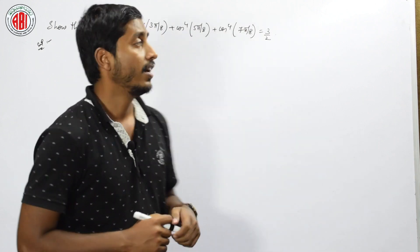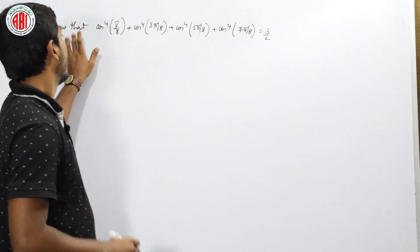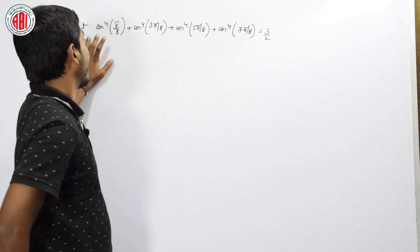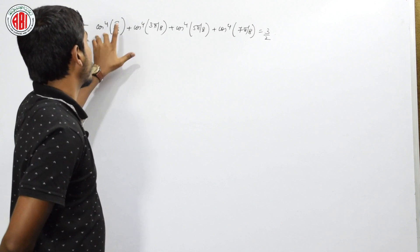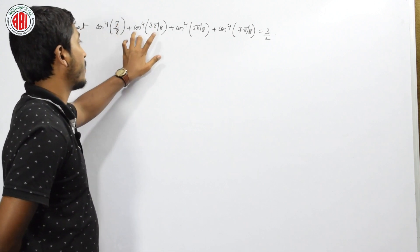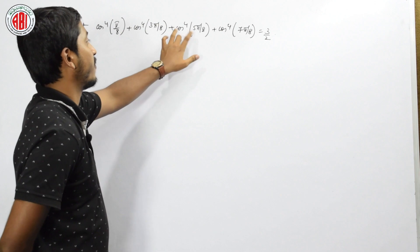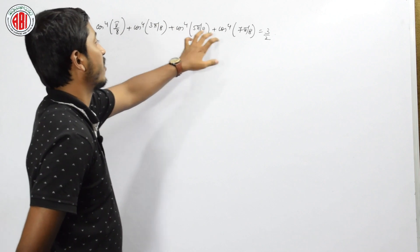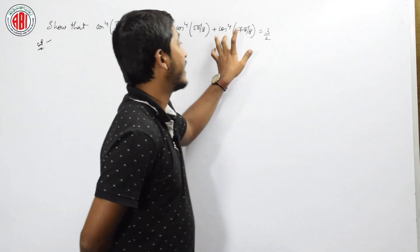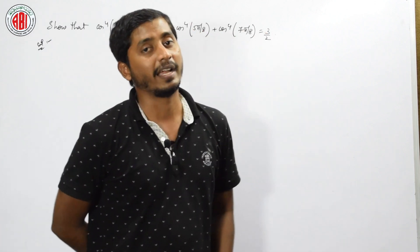The question today is: show that cos⁴(π/8) + cos⁴(3π/8) + cos⁴(5π/8) + cos⁴(7π/8) = 3/2.